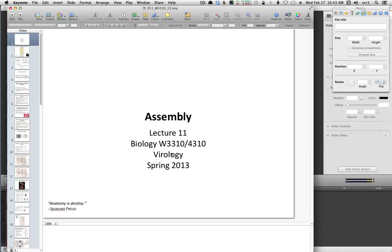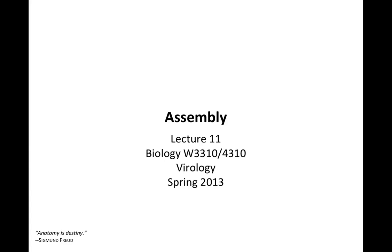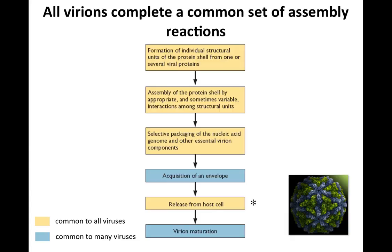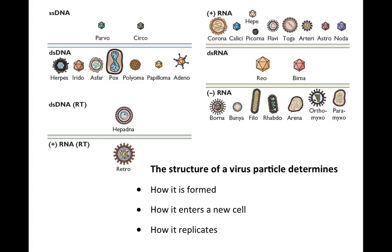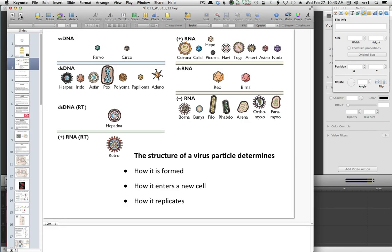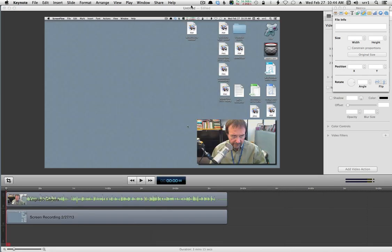I've opened my Keynote file. I'll then play it, which is the way I would play it to present it to an audience through a projector, of course. And then as I go through my slides one by one, ScreenFlow is recording the video and my audio. When I'm done, I simply leave the Keynote presentation, go back to ScreenFlow, and hit Stop Record.